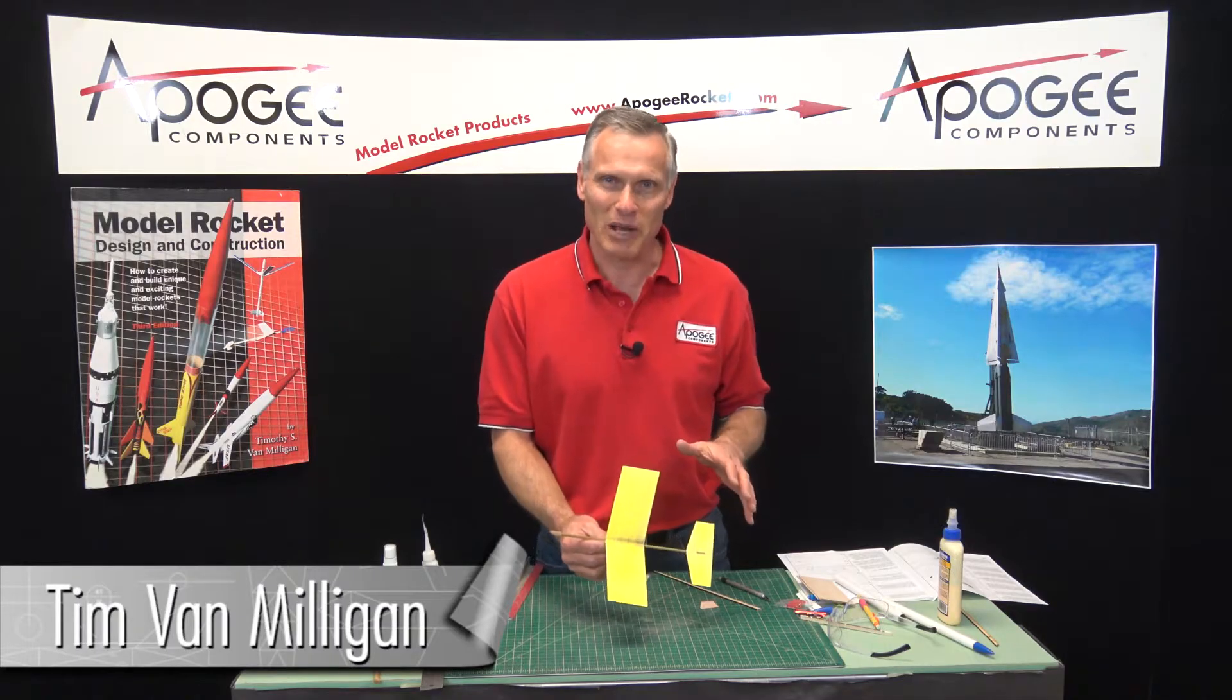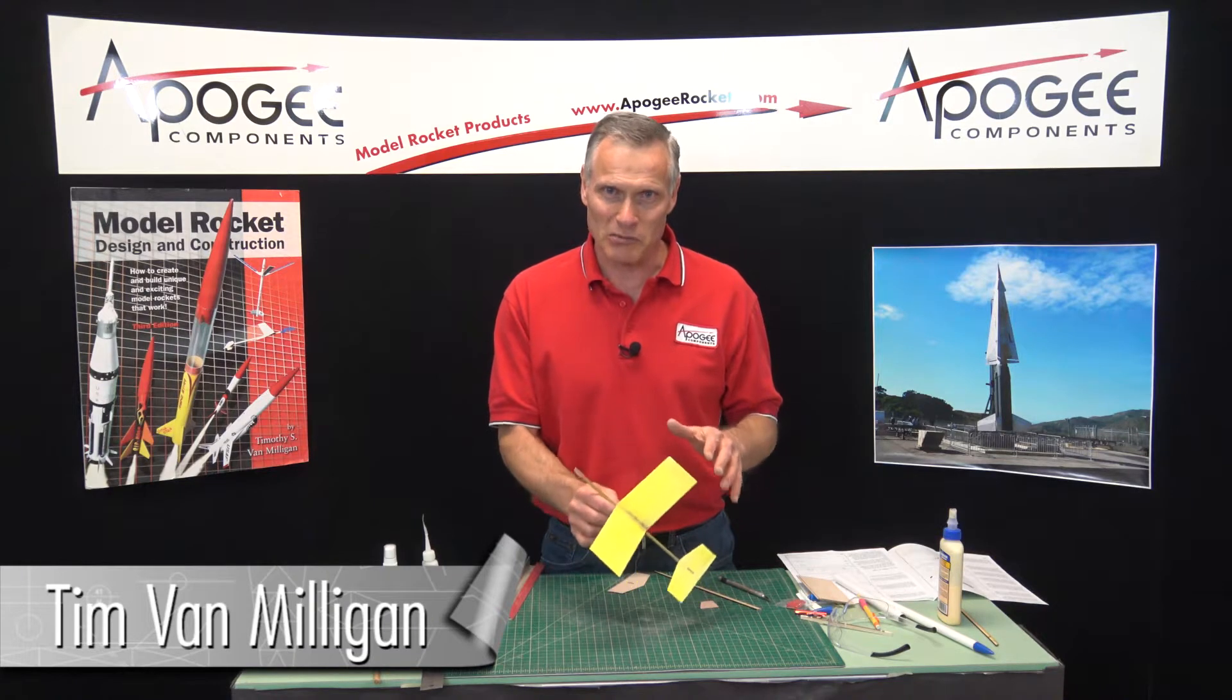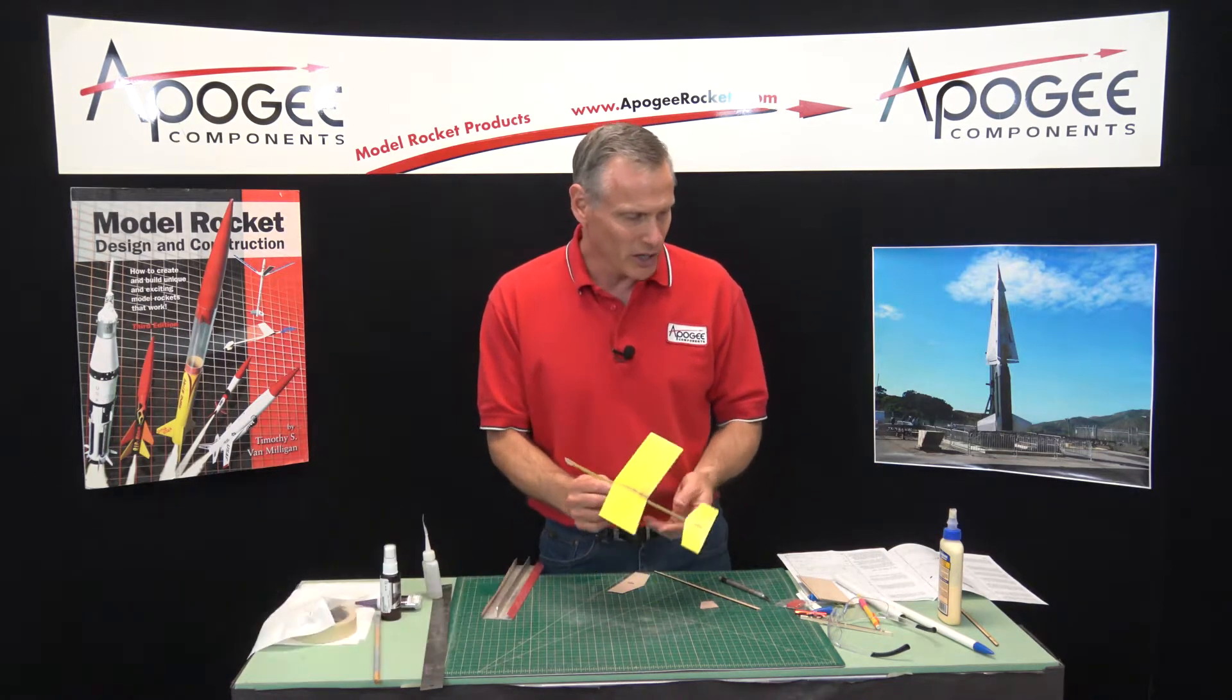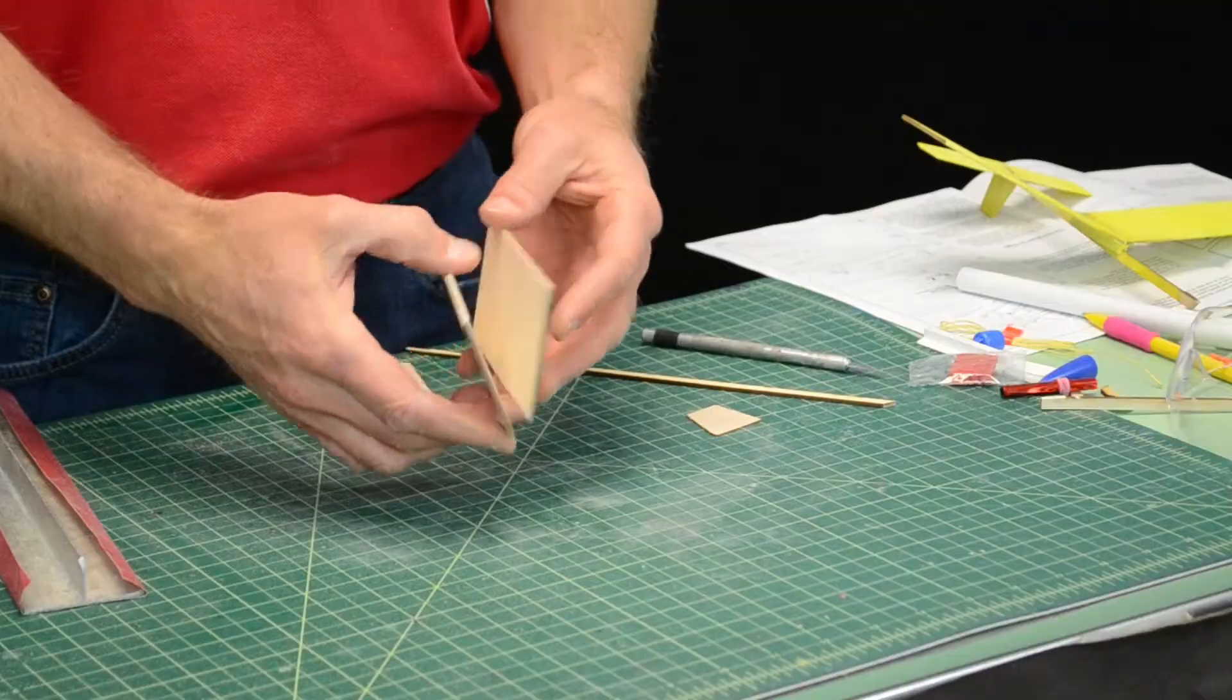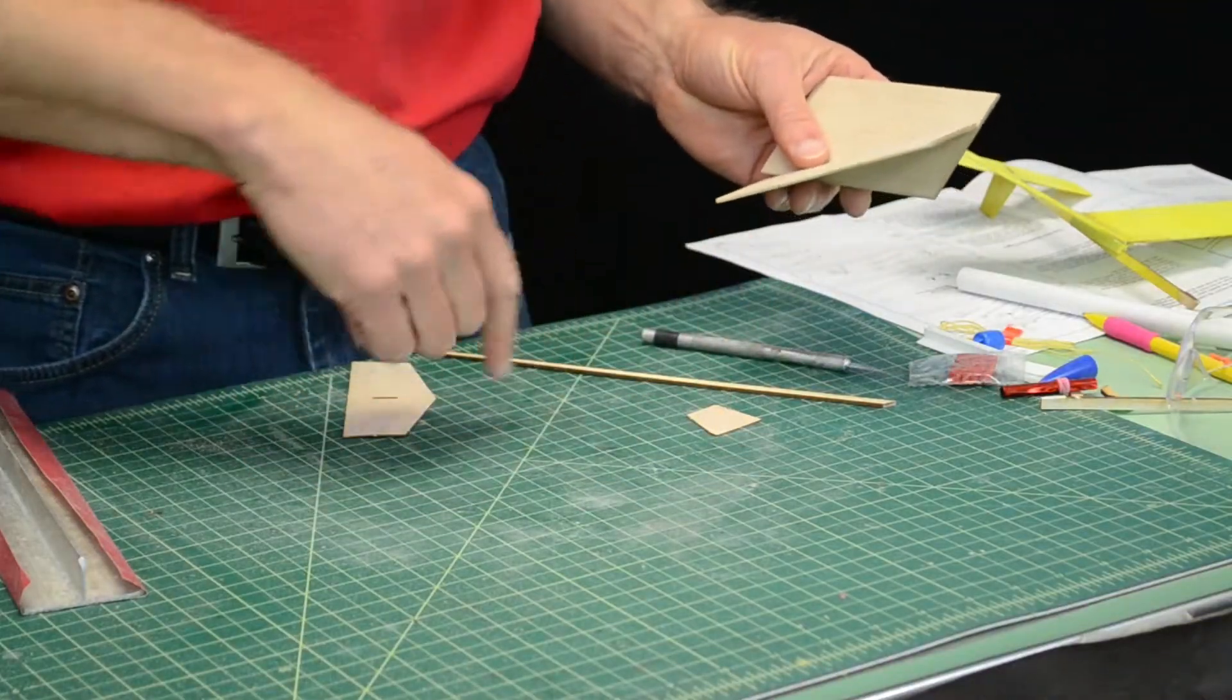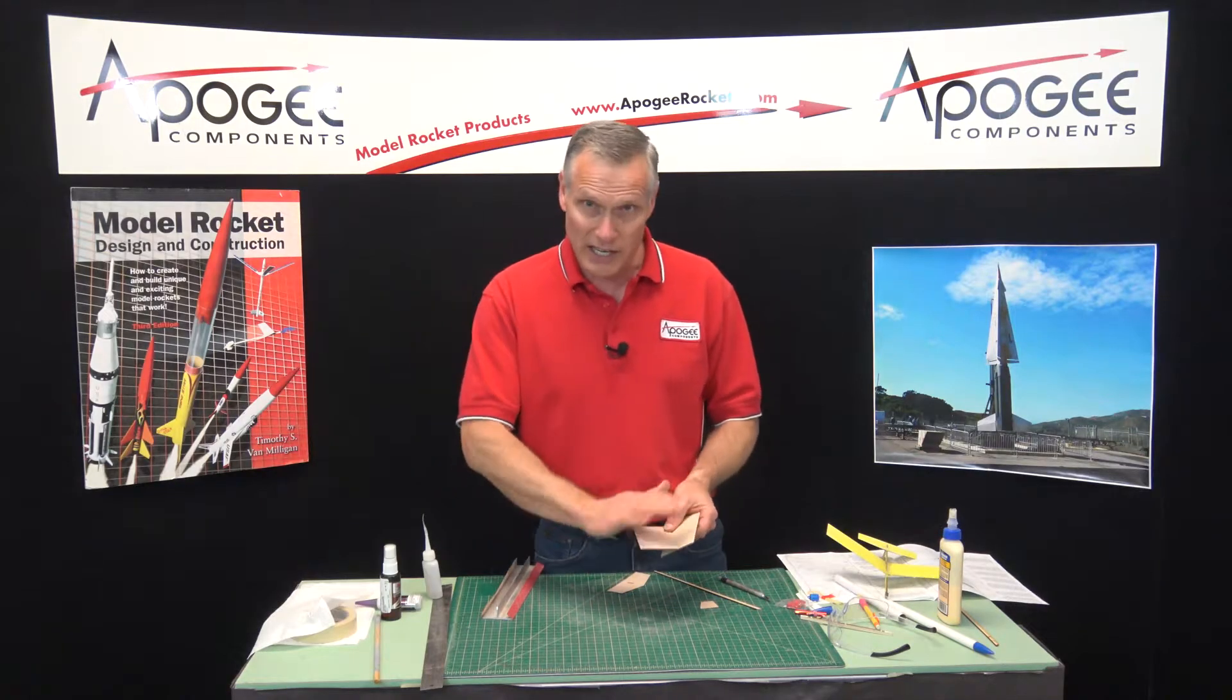Hi, I'm Tim Van Milligan from Apogee Components. We're in the process of building the Mini Condor Boost Glider. In our last episode, we had removed the wings and the tail pieces from the balsa wood sheets and had sanded it smooth.